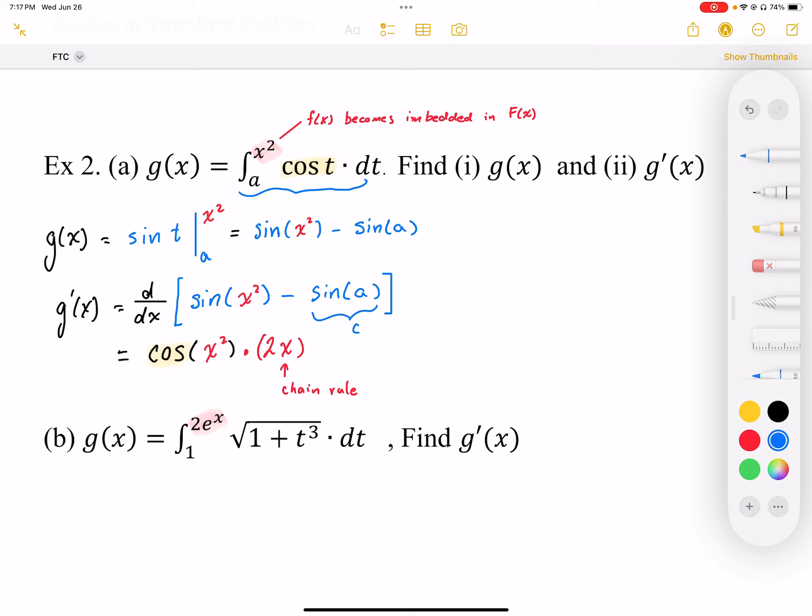So this is slightly different when we have these end bounds as actual functions. To accommodate that, we're going to embed that function into our integrand, or cos in this case. But we have to remember to apply chain rule and differentiate the inside function and add it on as a chain.